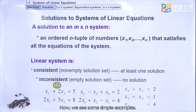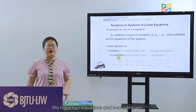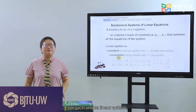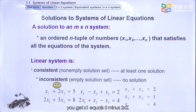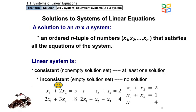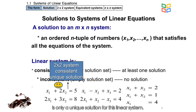Now we see some simple examples. The first linear system is a 2×2 system with two equations and two unknowns: x1 + 2x2 = 5 and 2x1 + 3x2 = 8. As learned in high school, you can use the first equation to get x1 = 5 − 2x2, substitute into the second equation, and solve. This system has a unique solution, so it is consistent.